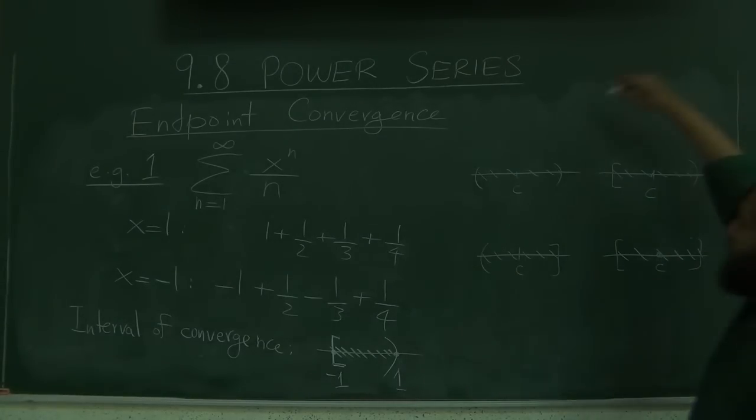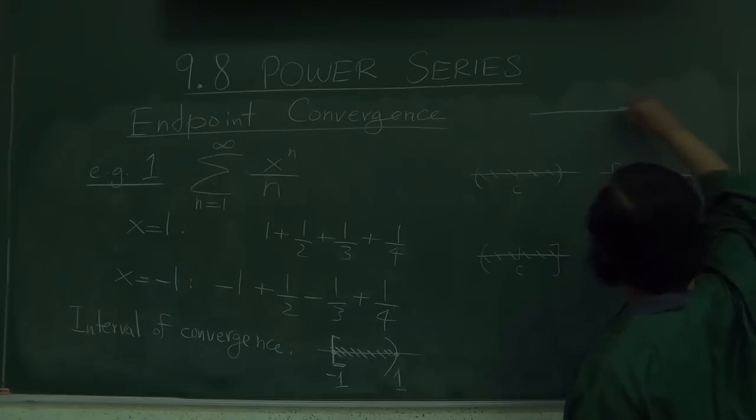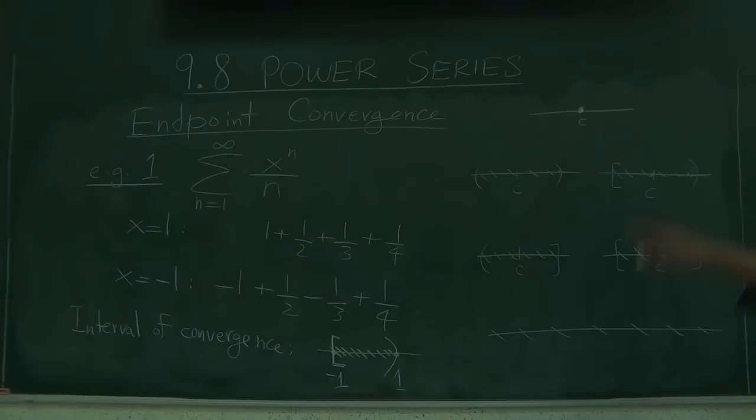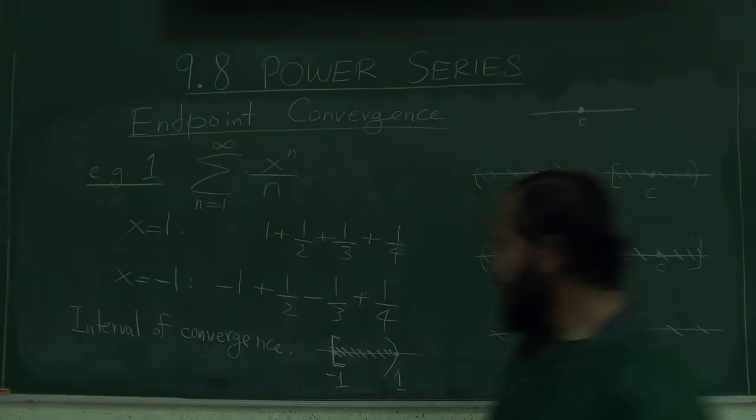And in addition to that, we saw the other 2 possibilities are just the point C and the whole number line. So these are the 6 possibilities of domains of definition of a function that is defined as a power series.